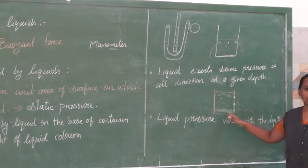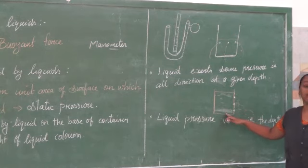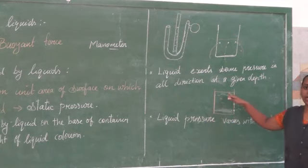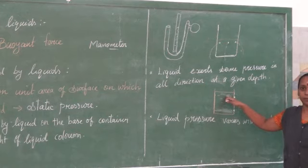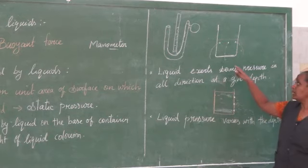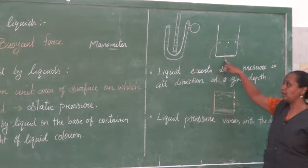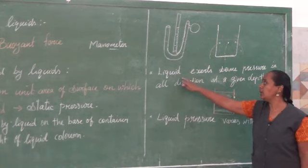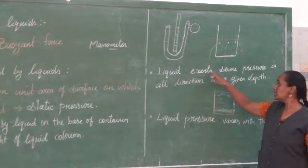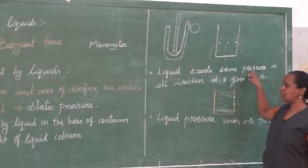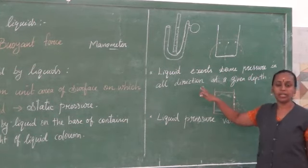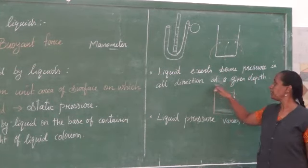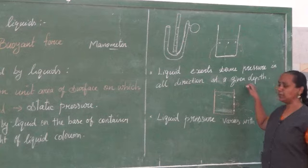This shows that the pressure at the base will be more compared to the top. That is why dams are built stronger and broader at the base — to withstand this liquid pressure. Liquid pressure varies with depth; at greater depth the pressure will be more compared to the top.